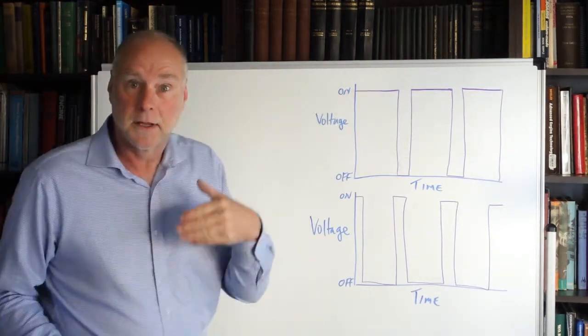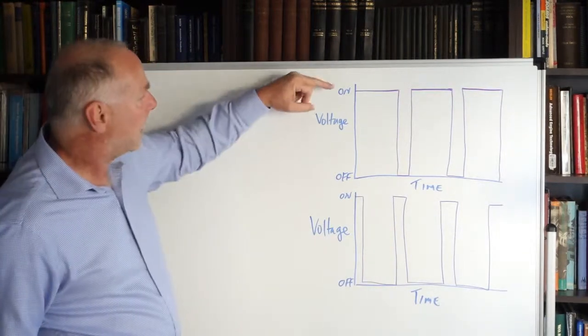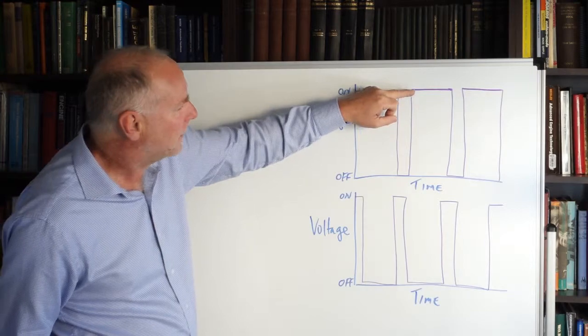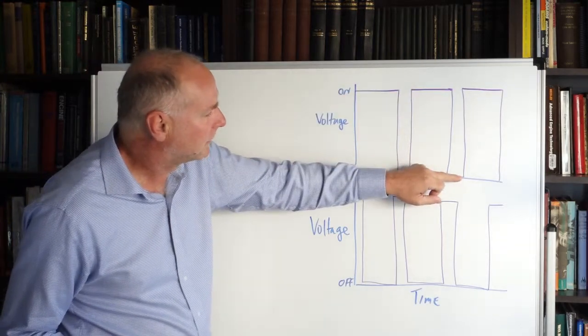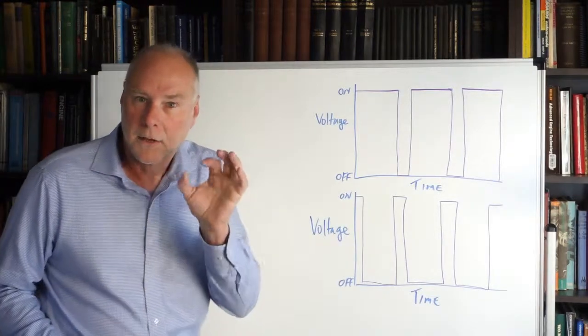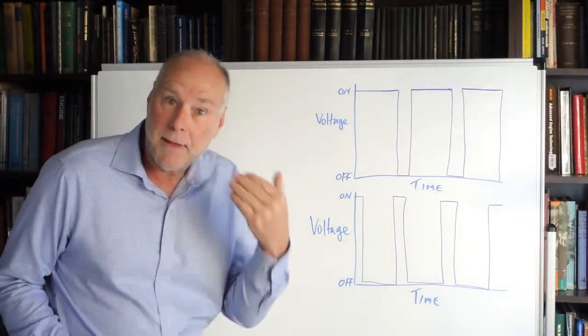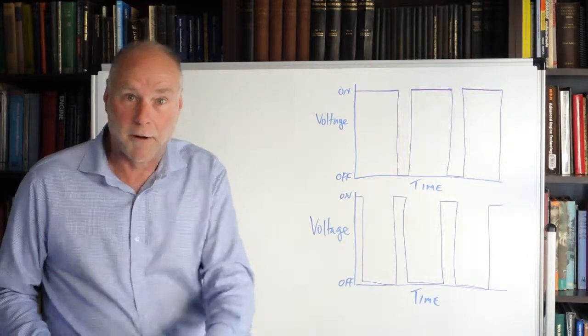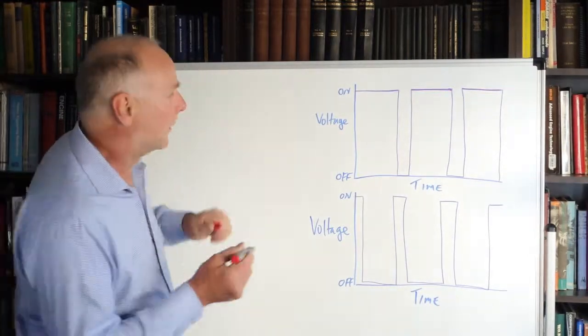You can see I've done a digital signal. It's on or off. The signal alternates between on and off. But look carefully. See how the amount of time it's on is different to the amount of time it's off. I'm going to highlight where it's on. It's on there, it's on there, and it's on there.